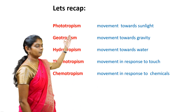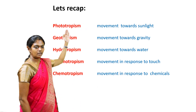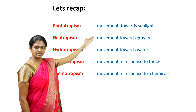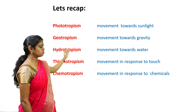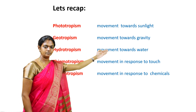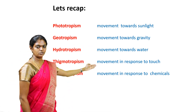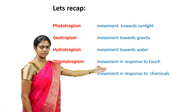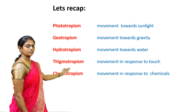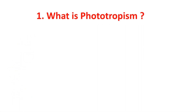Let's recap. Phototropism — movement towards sunlight. Geotropism — movement towards gravity. Hydrotropism — movement towards water. Thigmotropism — movement in response to touch. Chemotropism — movement in response to chemicals.